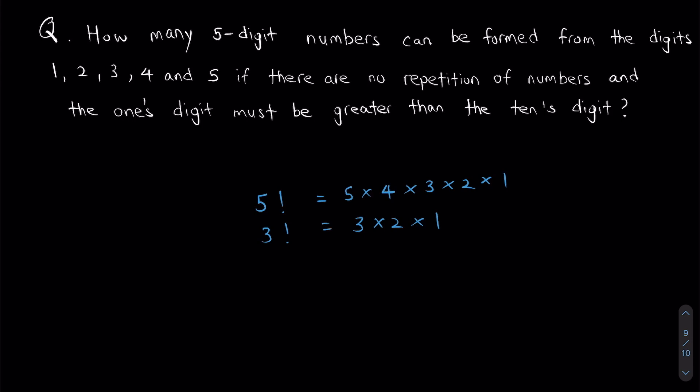called a factorial. At this point, take note of the definition of an exclamation mark. Now let's address the question. We want to form five-digit numbers. The numbers cannot repeat and the ones digit must be greater than the tens digit. How do we approach this question?